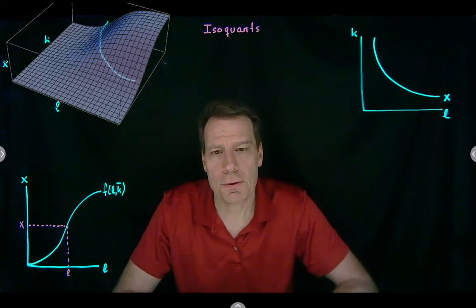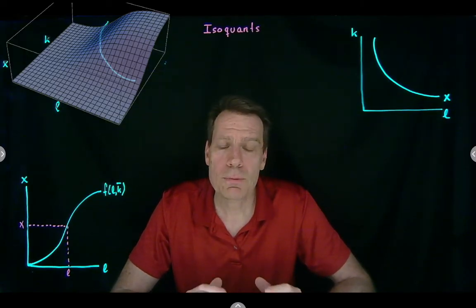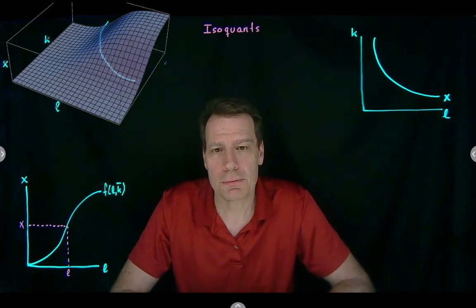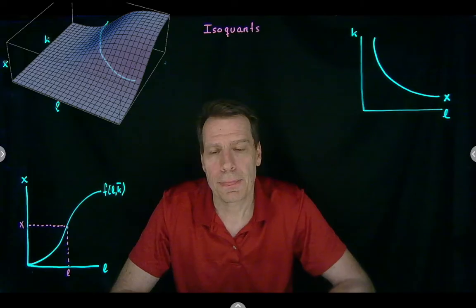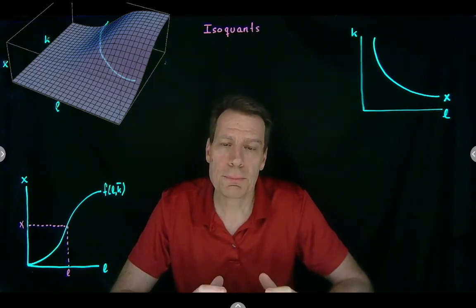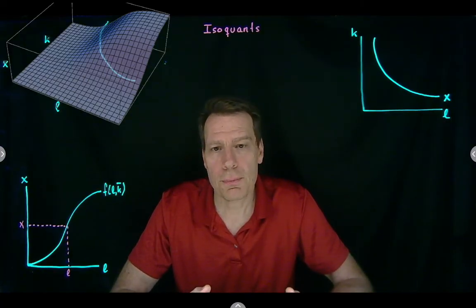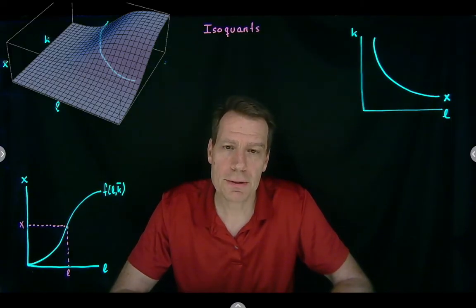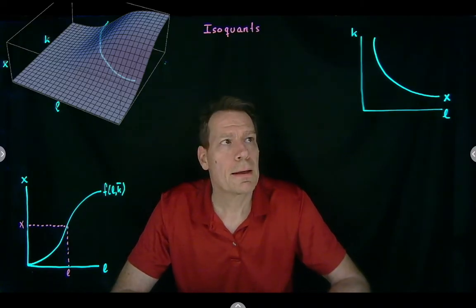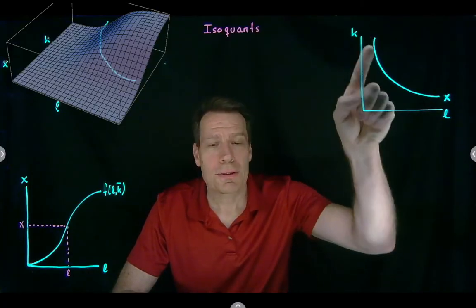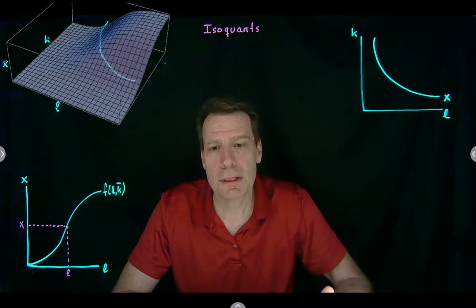This tells us all the combinations of capital and labor that can produce a certain level of output. Now it looks exactly like an indifference curve, and in many ways it is very much like an indifference curve. But in one way it's not: firms are not indifferent between the production plans on an isoquant. Firms are indifferent between production plans that result in the same level of profit. So the indifference curves for firms are really the profit lines, or the profit plane, that we've been talking about before.